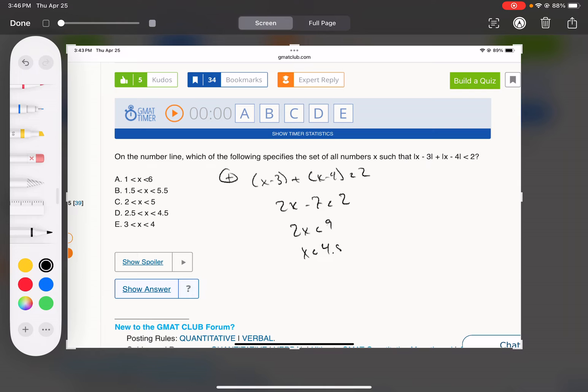X is less than 4.5. And to go to the other extreme, let's do the negative-negative case where both those terms, so it would be like negative x minus 3 minus x minus 4, is less than 2.